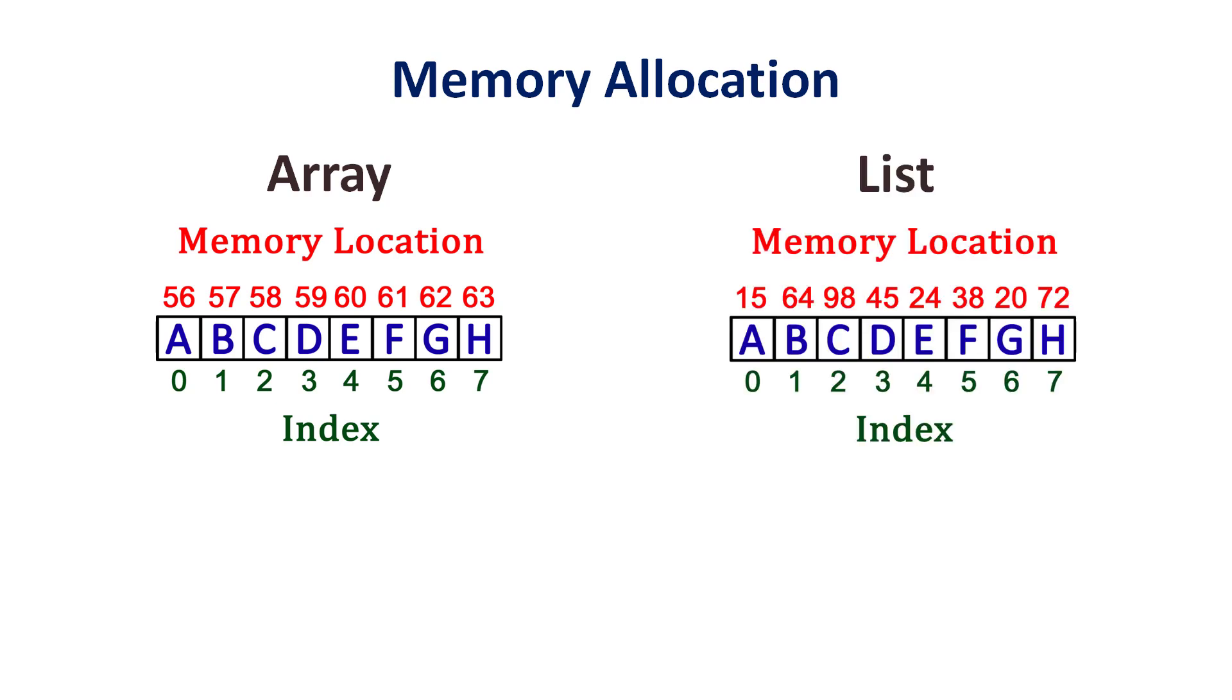Whereas, in a list, these memory locations may be random. So, the operations which are performed on lists take longer time compared to an array, since it has to first interpret the addresses, get the elements, and then perform the operations on them.